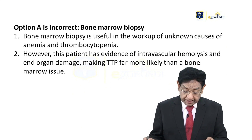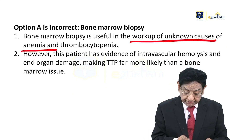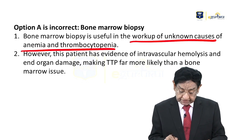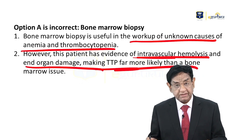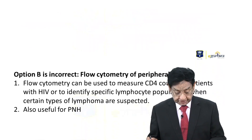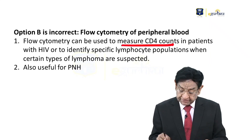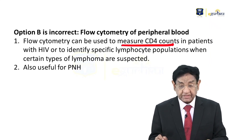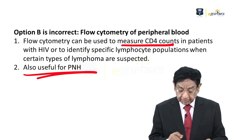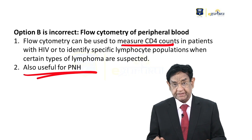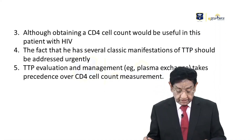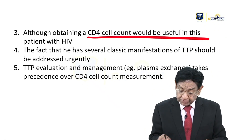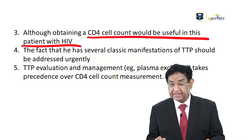Let's look at the other answer options. Bone marrow biopsy is useful in unknown cases of anemia and thrombocytopenia. However, this patient has evidence of intravascular hemolysis and organ damage, making TTP much more likely — so bone marrow biopsy is not the appropriate investigation. Flow cytometry is done to measure CD4 cell count, which may be useful for HIV management but is not an investigation for TTP. Remember, HIV is causing TTP — we are investigating for TTP, not for HIV. Obtaining a CD4 count would be useful later but is not the first step.